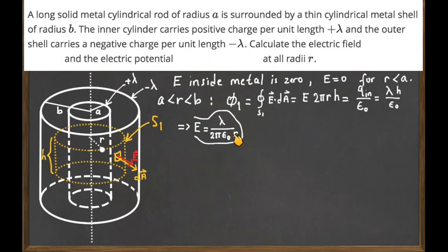This means that in the region between the two cylinders, the electric field decays as 1/r as you move away from the central axis.